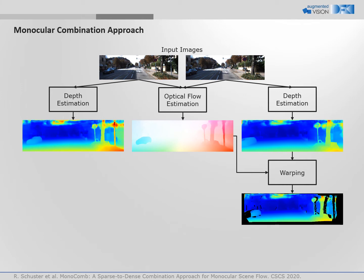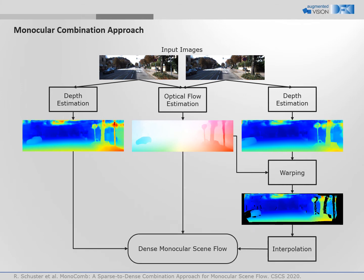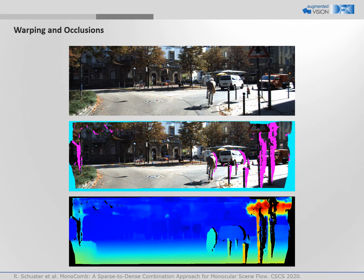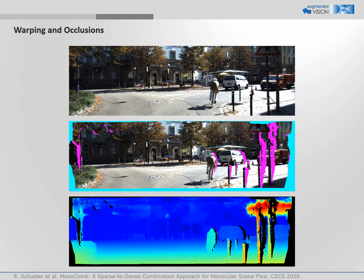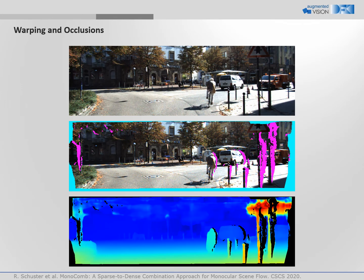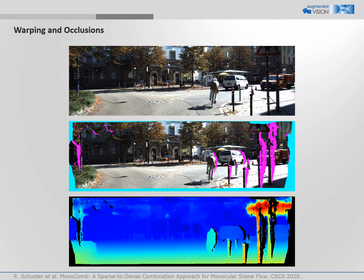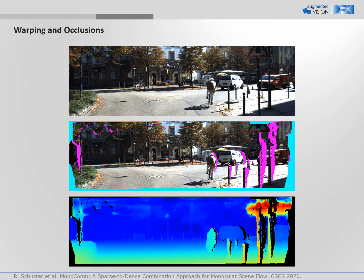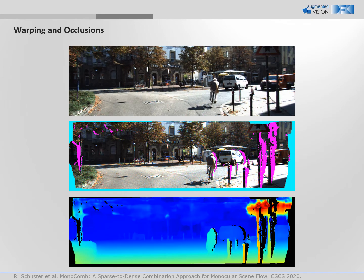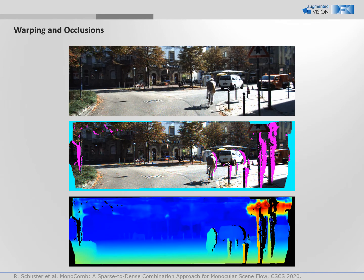During the warping, occlusions are detected and masked. In a last step, dense scene flow is reconstructed by interpolation. For occlusion estimation during warping, we exploit the pixel correlations given by the optical flow and compare the depth values of overlapping points.